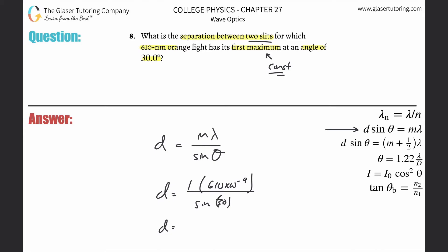Let's do it: 610 times 10 to the minus ninth divided by sine of 30, and we get about 1.22 times 10 to the minus 6, and that's in terms of meters.